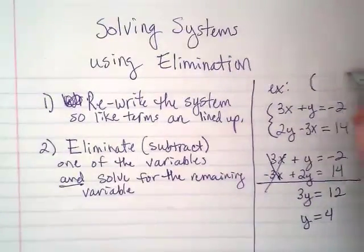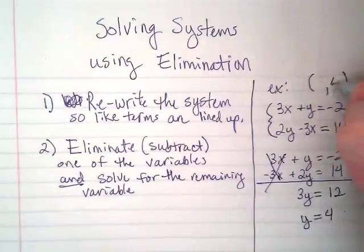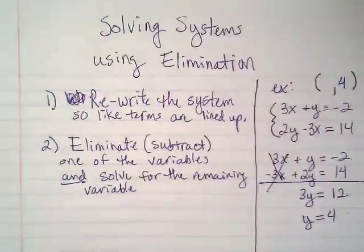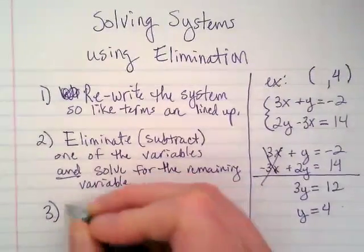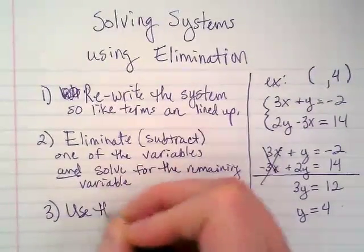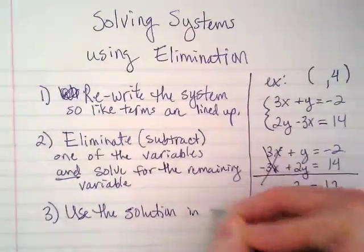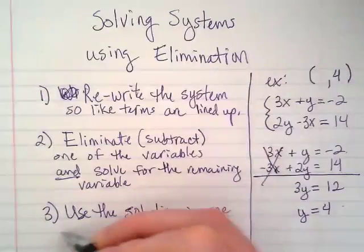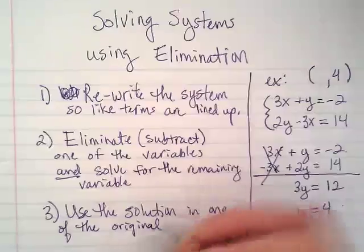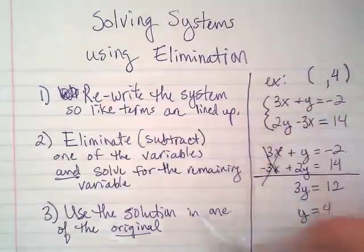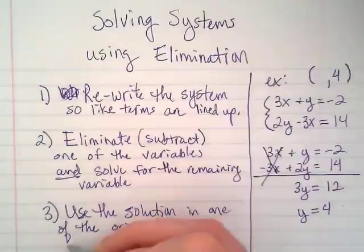And remember, our solution is an x-y pair. We have half of it. We know that the y is 4. Step 3, use the solution in one of the original equations. And this is important. It doesn't matter which one, but it has to go back to these to solve for the other variable.